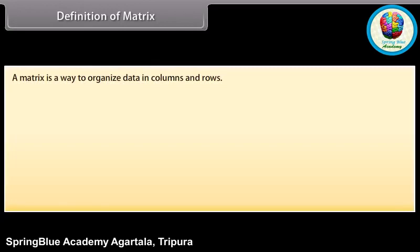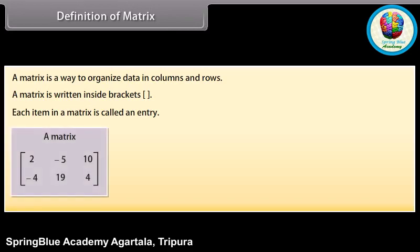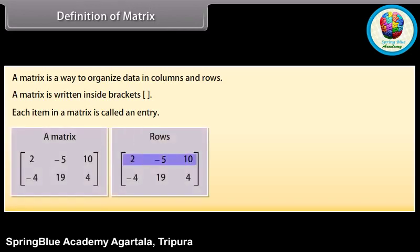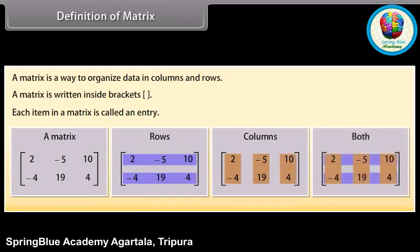Definition of matrix. A matrix is a way to organize data in columns and rows. A matrix is written inside brackets. Each item in a matrix is called an entry. Look at this matrix. It has two rows and three columns. The entries of the matrix below are 2, minus 5, 10, minus 4, 19, 4.